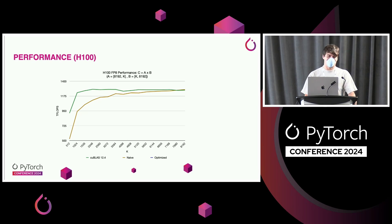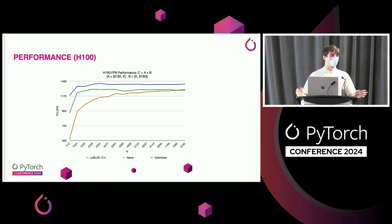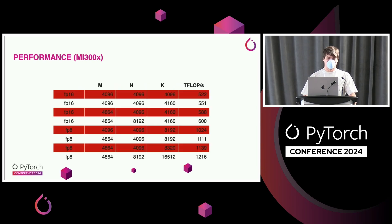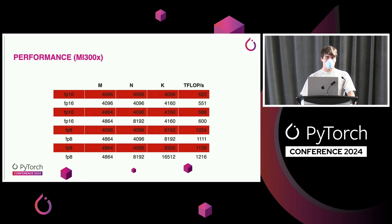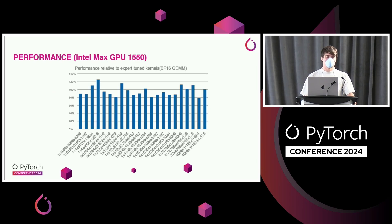Performance is pretty bad when matrices are small, especially along the reduction dimension. Over the past year we've done a lot of work to improve that, and our latest results show that if you write your kernel the right way you can actually be faster than cuBLAS on H100 with FP8. Similarly on MI300, writing the kernel the right way gives performance very comparable to handwritten kernels for that architecture. On Intel it's the same story — presented at the Triton conference yesterday.